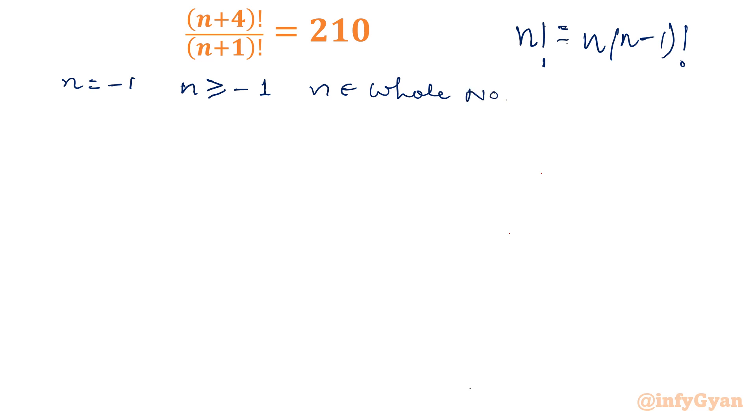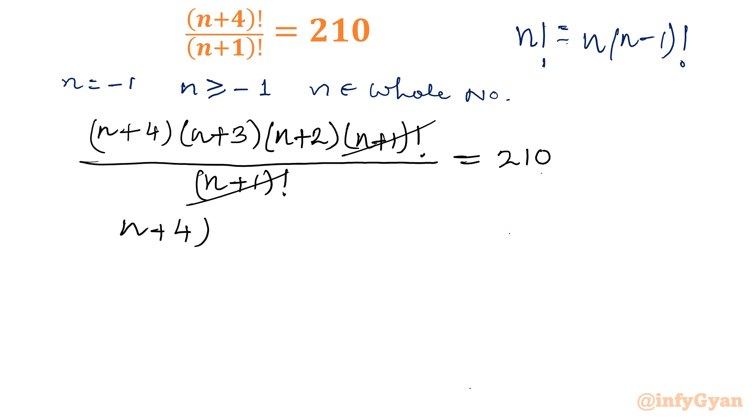Let's get started using recursive formula. I will begin with (n+4) factorial. I can write (n+4)(n+3), decrement by 1, (n+2). And as per our denominator, I can stop here (n+1) factorial divided by (n+1) factorial equal to 210. Now I will cancel (n+1) factorial.